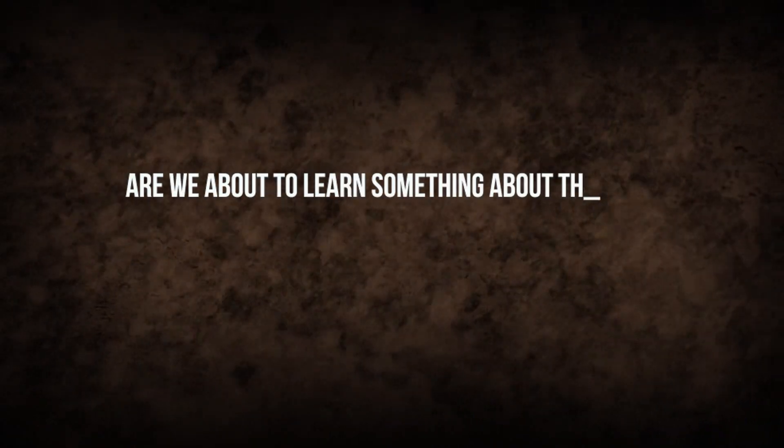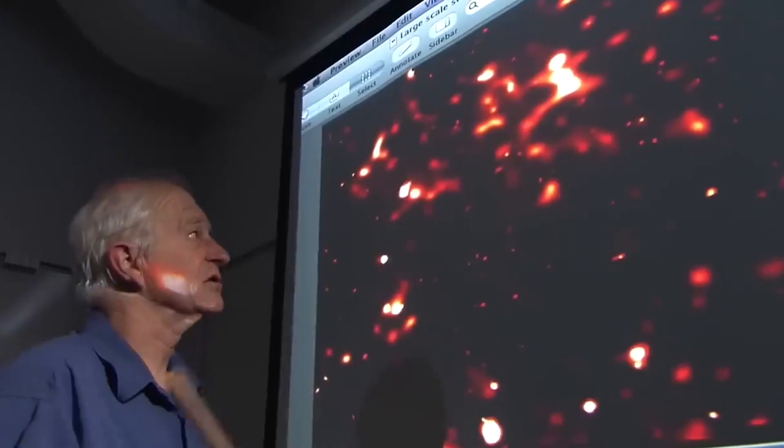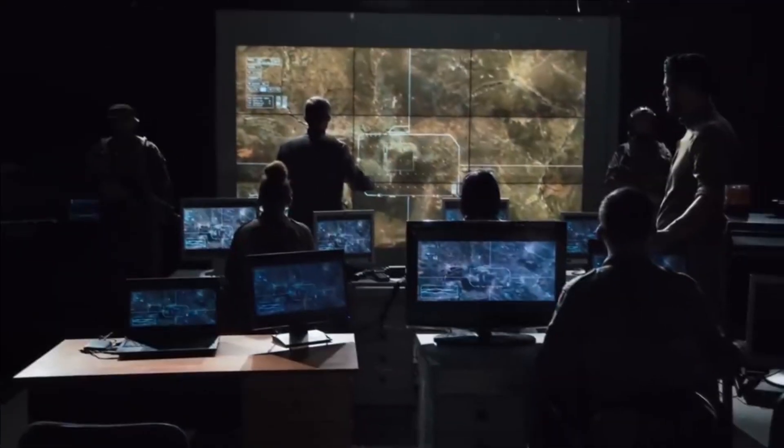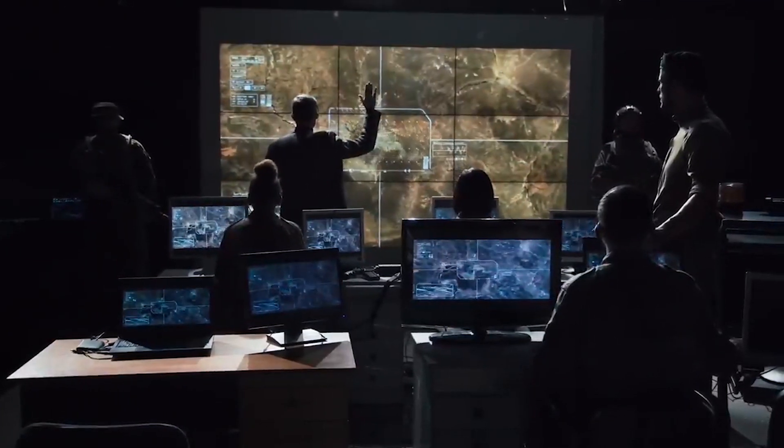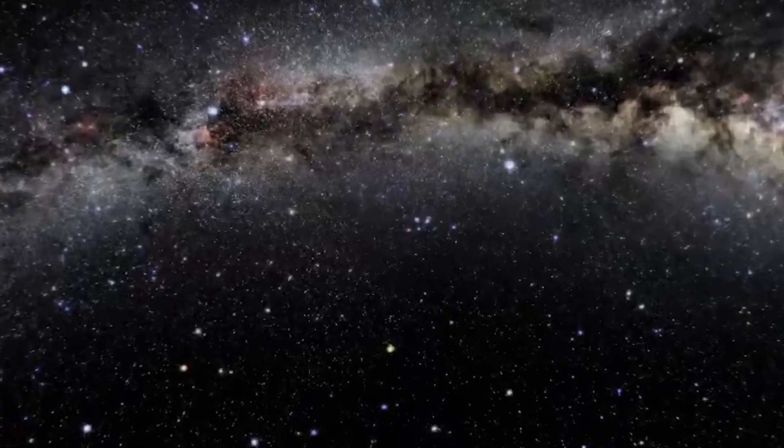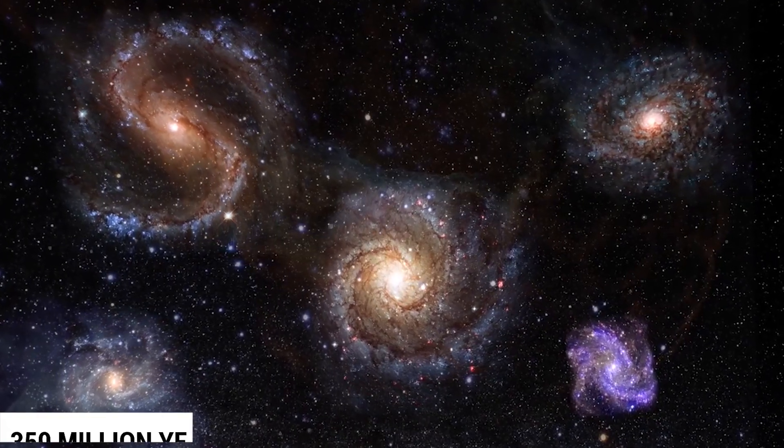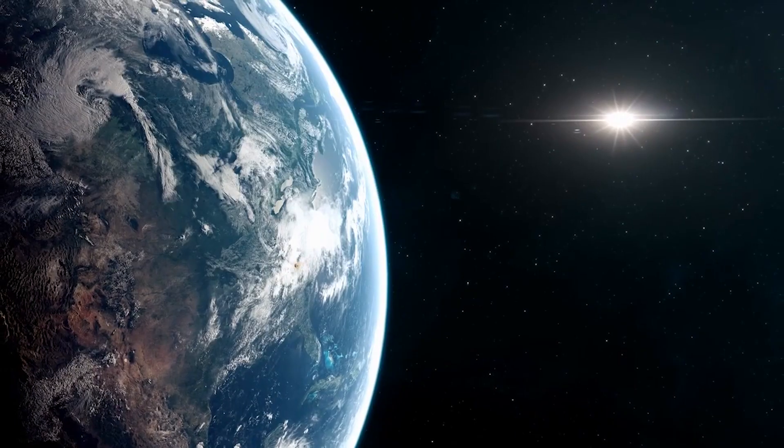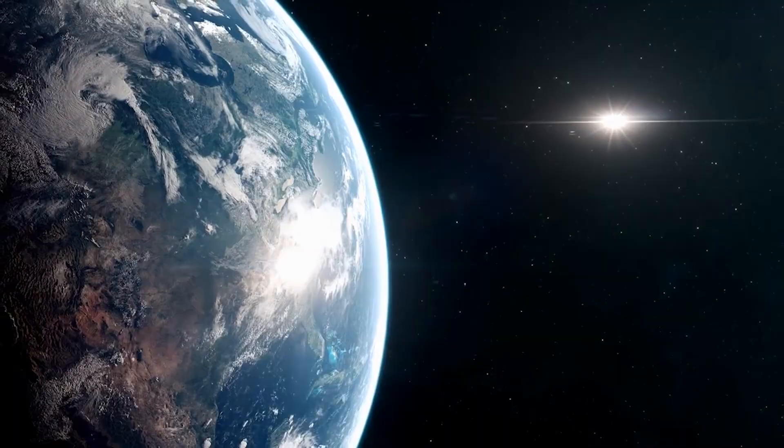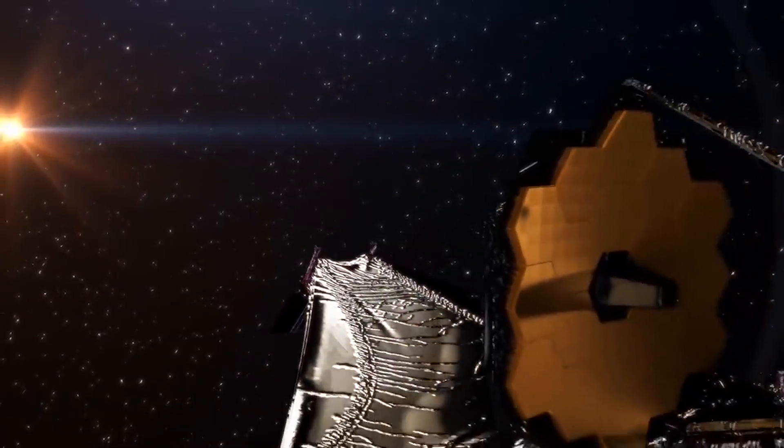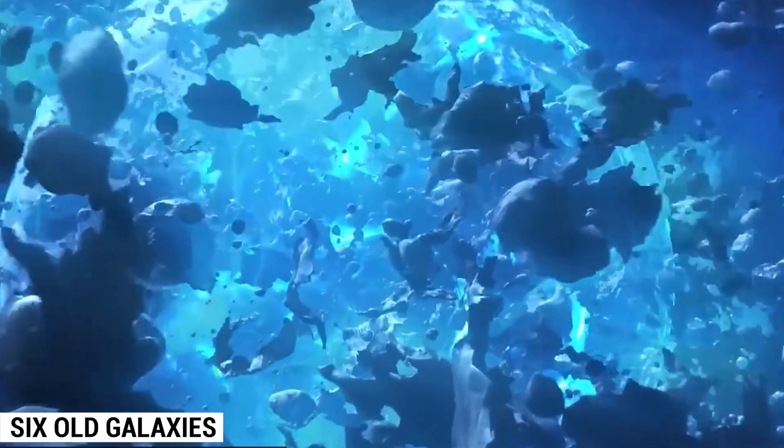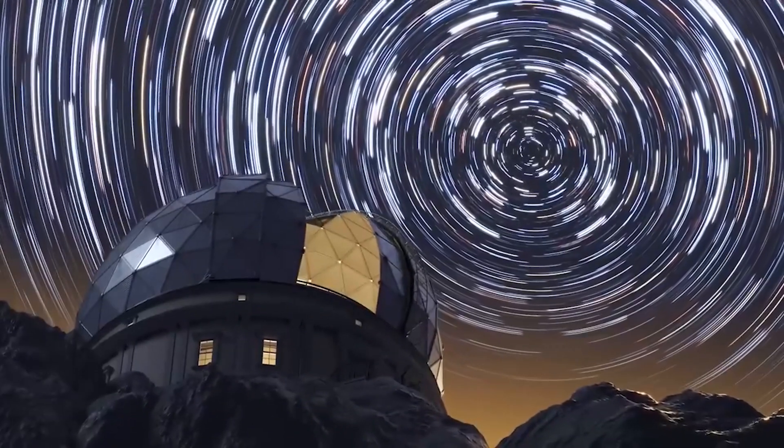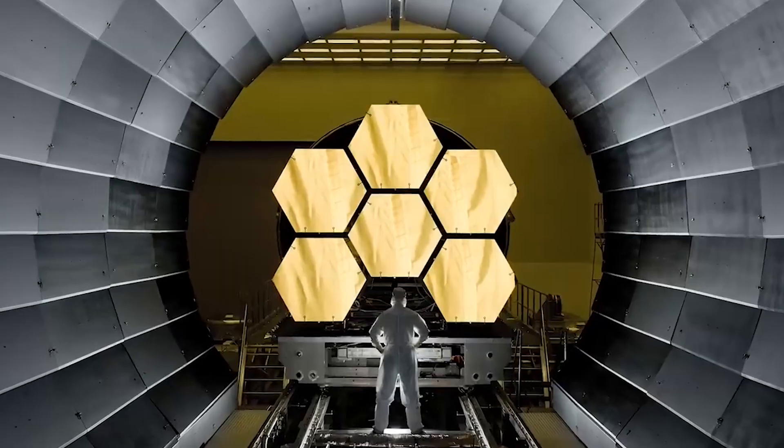Are we about to learn something about the universe that will change everything? To put things in perspective, think about how big it would be to start from scratch and make a galaxy. The first galaxies took the universe 350 million years to form and were tiny compared to what we see now. But the James Webb Telescope has found six old galaxies that were thought to have formed just 500 million years after the Big Bang.